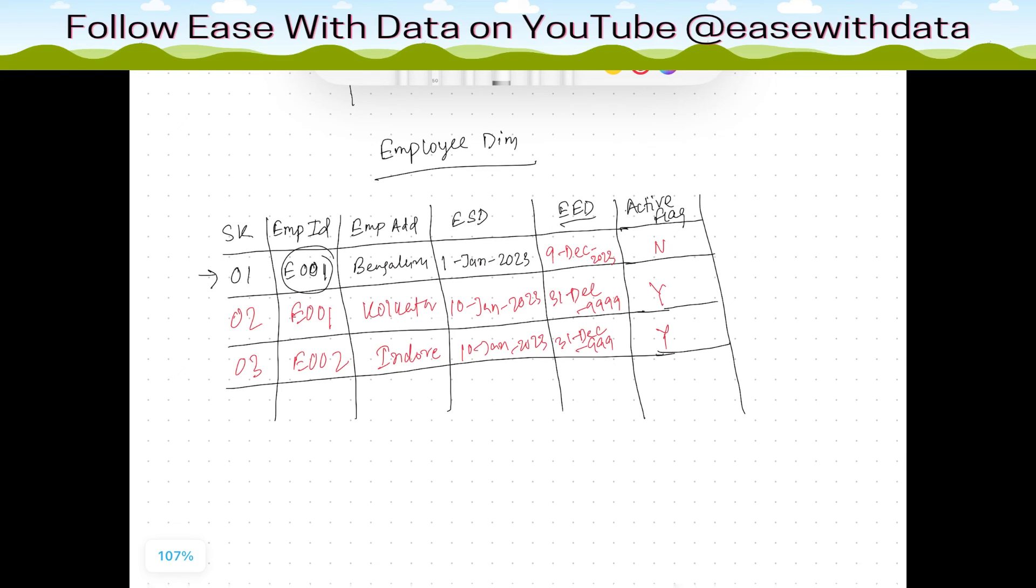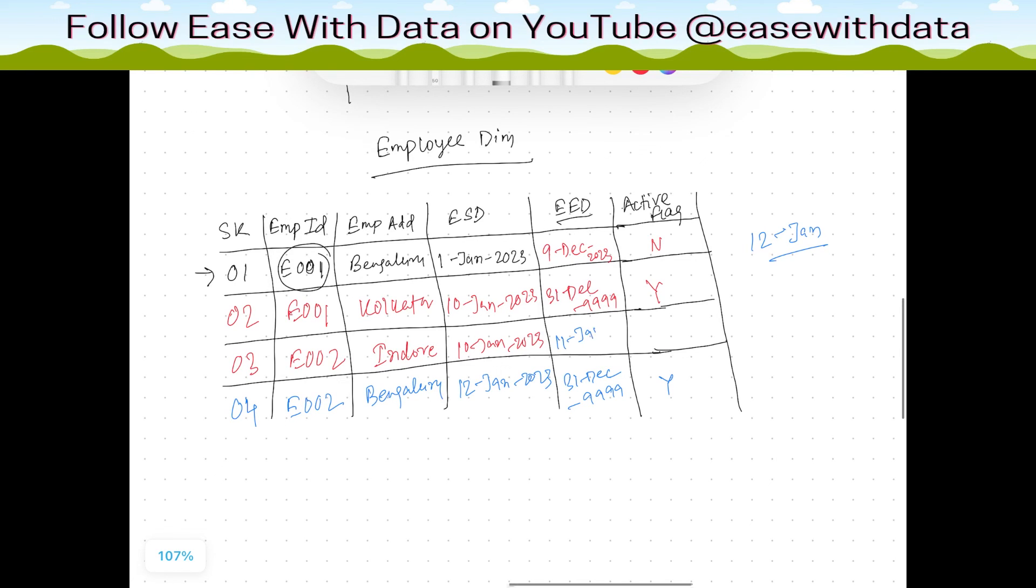Consider we again get a change for the employee E002. Suppose on 12th Jan we again get a change for employee E002. Now the employee moved to Indore. In this case, this will be 12th Jan 2023, it will be high date record because this is the active record, and this would be Y. Now this will change. This particular section will change. This will become 11th Jan 2023 and this will become active flag N. So this is how we maintain history in SCD type 2.